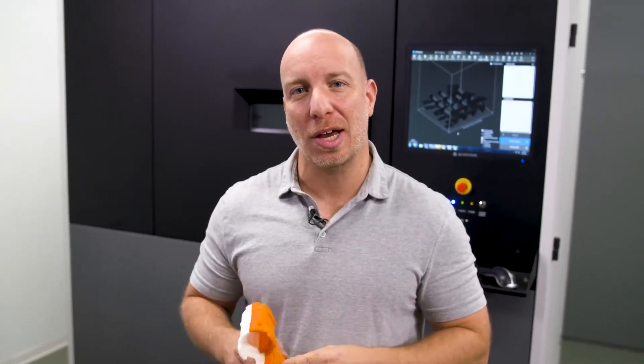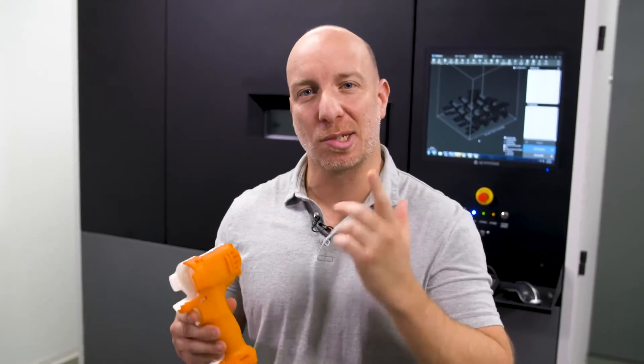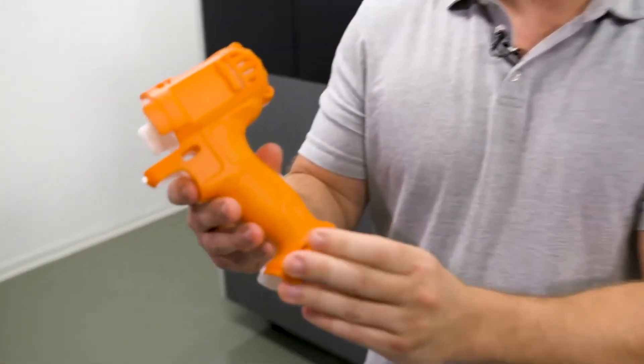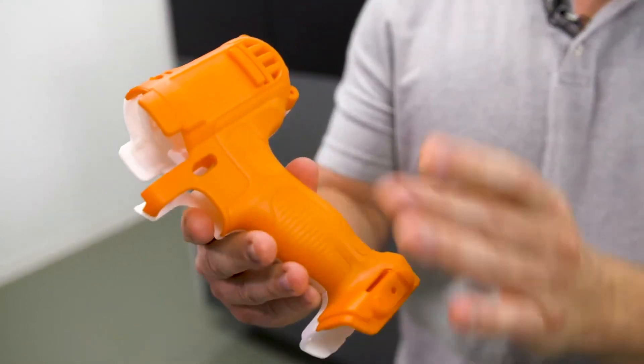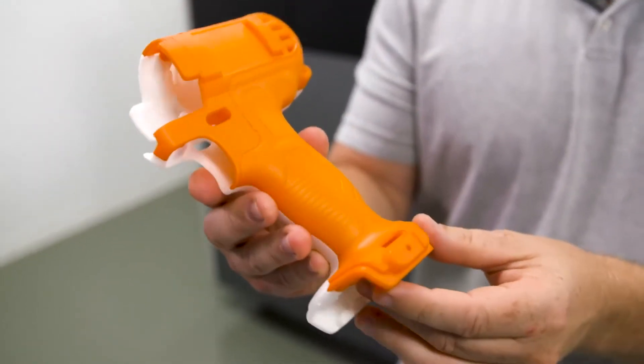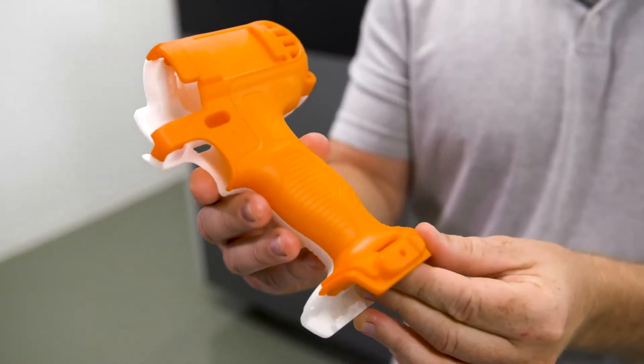Two, parts printed on the Pro-X SLS 6100 feature best-in-class surface quality, accuracy and sharpness. As you can see from parts such as this, where you see no unwanted holes, no divots and no gaps between the different print layers.